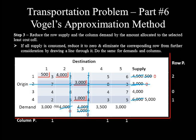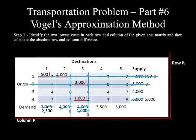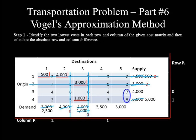Deducting the allocated 500 reduces supply from 500 to 0 and demand from 3,000 to 2,500. Row 1 is deleted because origin 1 supply is reduced to 0. Now only two rows remain uncrossed. Row 3 penalty is 4 minus 4 equals 0; row 4 penalty is 3 minus 2 equals 1. Three columns remain unlined, each with two undeleted unit costs, so the column penalty is simply the difference between those two costs: column 1 is 4 minus 2 equals 2; column 4 is 4 minus 3 equals 1; column 5 is 7 minus 5 equals 2.